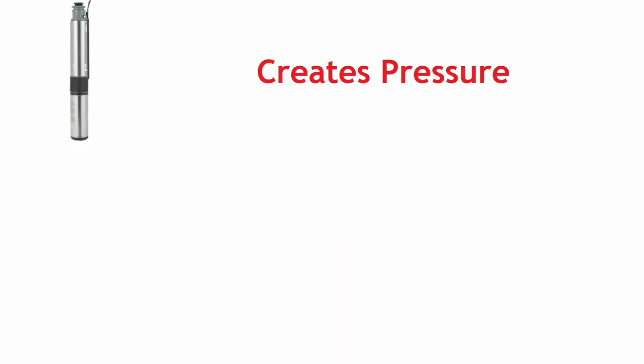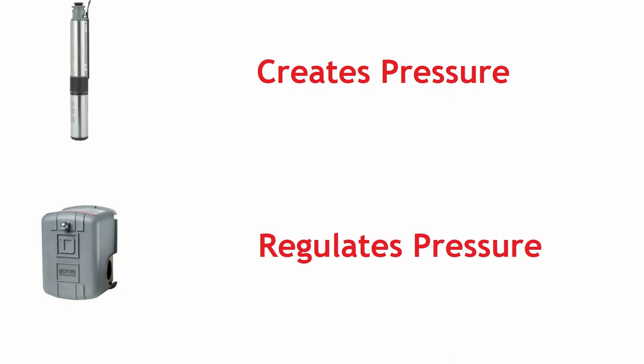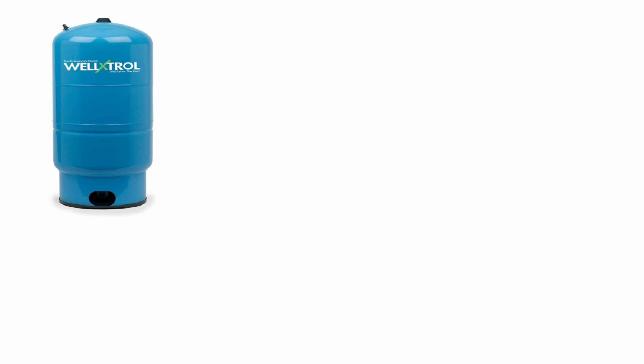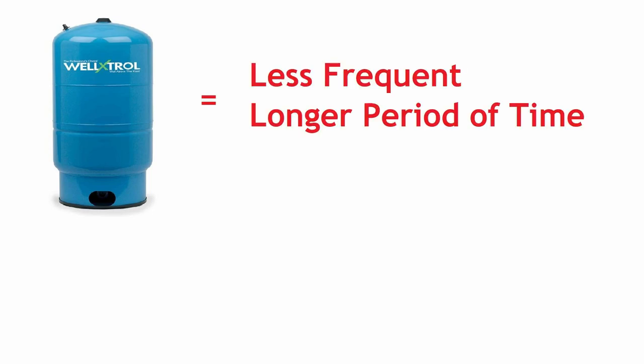The pump creates pressure and a pressure switch regulates the pressure. What the tank does is regulate the cycle duration and frequency. For example, with a bigger tank the pump will run less frequently and for a longer period of time.